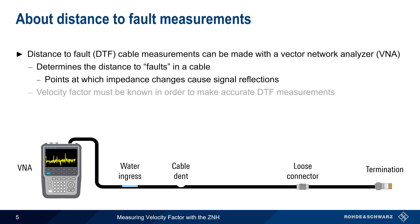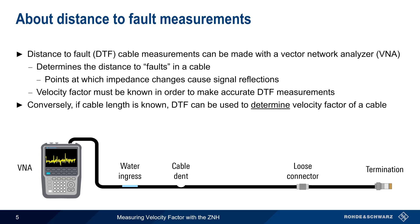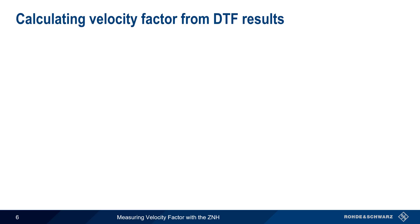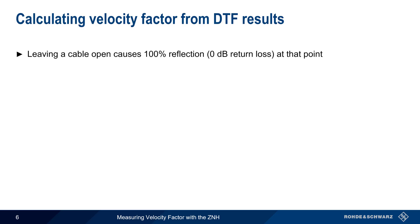The velocity factor of the cable must be known in order to make accurate distance-to-fault measurements. Conversely, if the cable length is known, a distance-to-fault measurement can be used to determine the velocity factor of a cable, and this is done by creating a large fault at the end of the cable. Leaving the end of a cable open or un-terminated will cause all of the transmitted signal to be reflected from that point back towards the source.